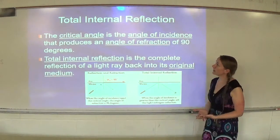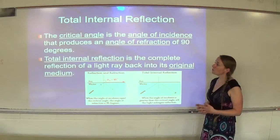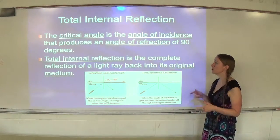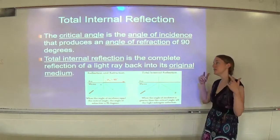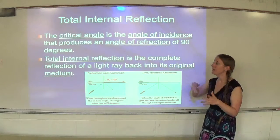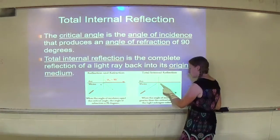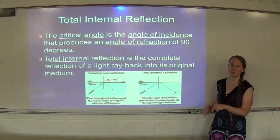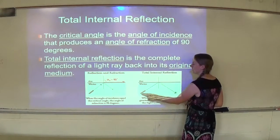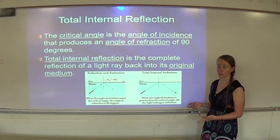The critical angle is the angle of incidence that produces an angle of refraction of 90 degrees. Total internal reflection is the complete reflection of a light ray back into its original medium. If light hits a surface at the critical angle, instead of passing into the next medium it reflects back into the original medium — for example, hitting the surface of water and reflecting back down instead of going into the air.